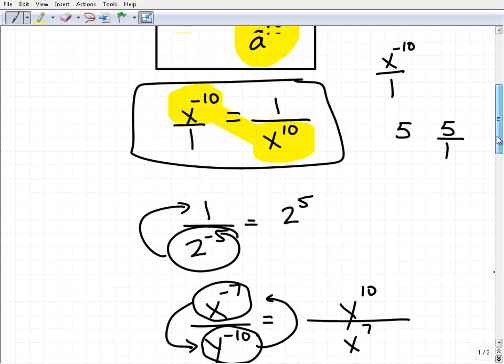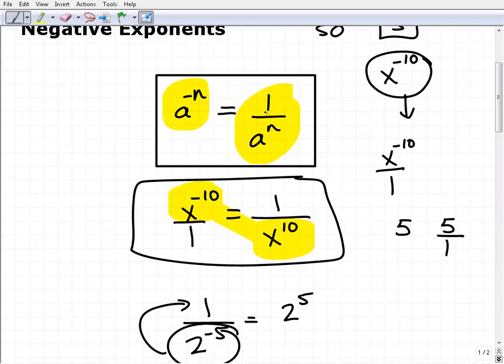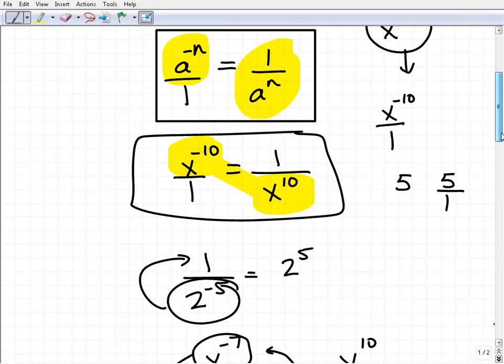So the rule really here, a to the negative n over 1, over 1, over a to the n. If I just put this over 1, it's stating the following: when you have a negative exponent, if you just put it to the opposite side of the fraction bar, the negative exponent goes away.